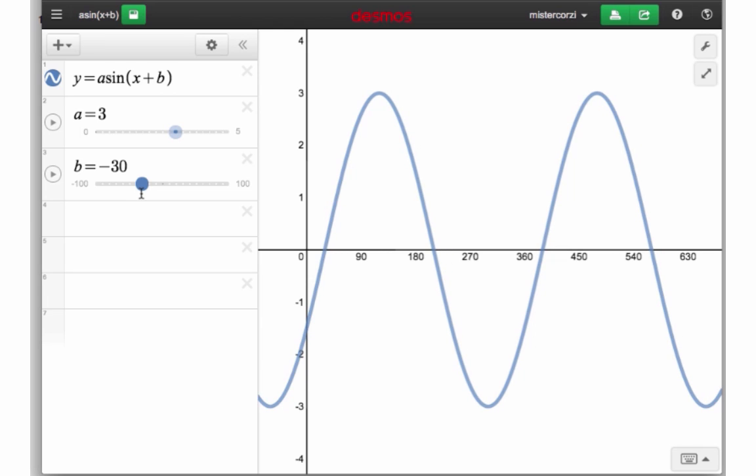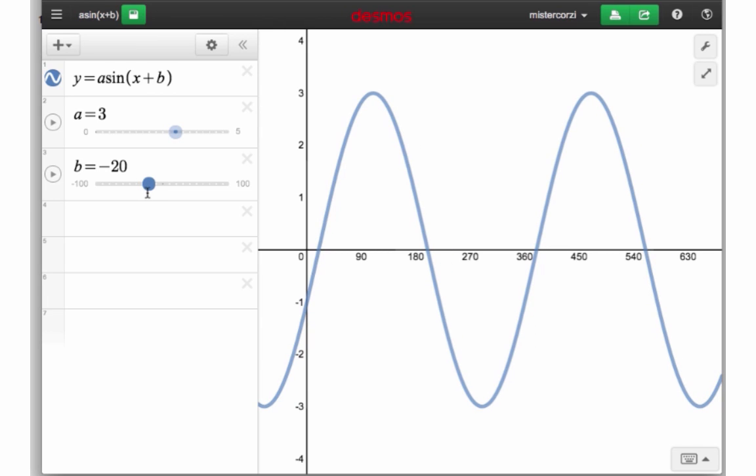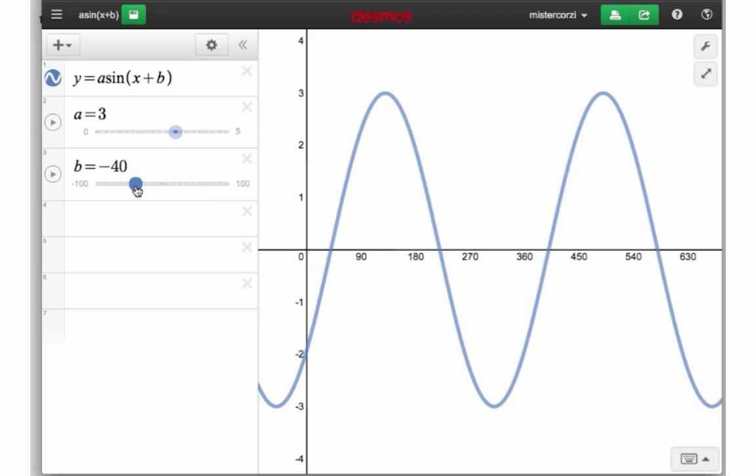And in this case, we're adding negative a number. I think negative 40, taking away 40, would produce a graph that's 40 degrees to the right. So let's go back to the question and see if we can now answer it.